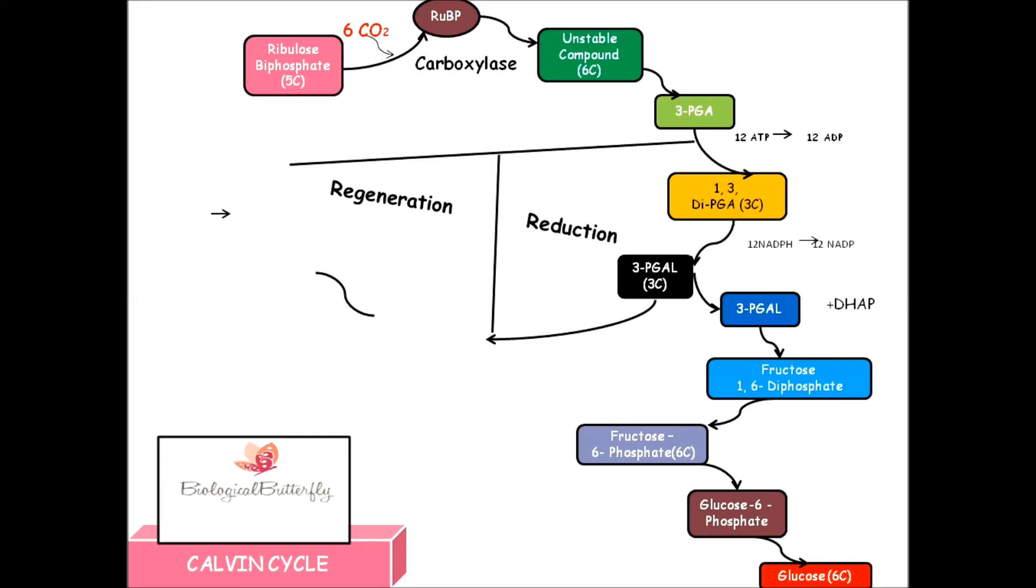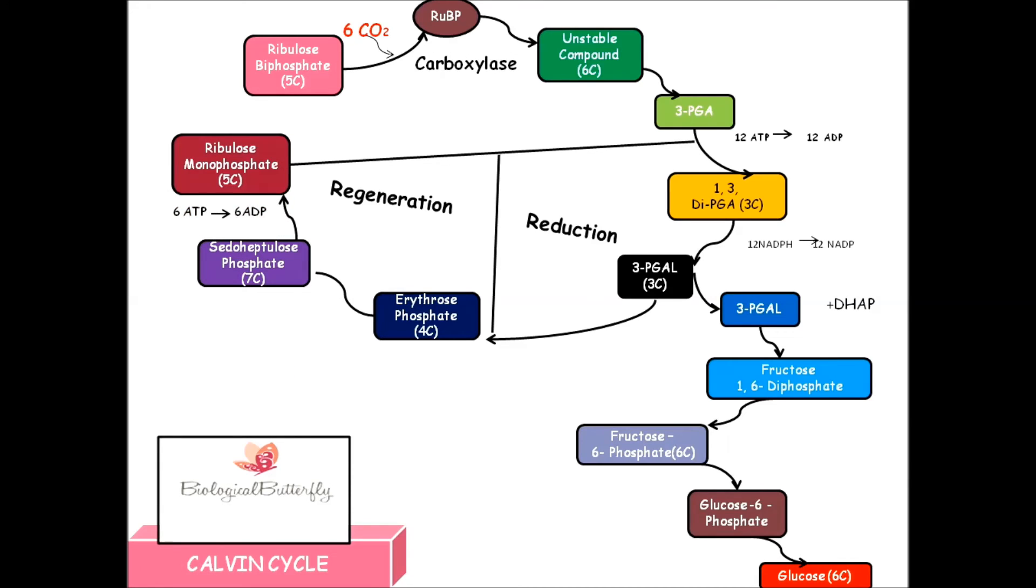There are a series of biochemical reactions called sugar phosphate interconversions, in which erythrose phosphate, sedoheptulose phosphate, and ribulose monophosphate get interconverted. Some amount of energy is removed...